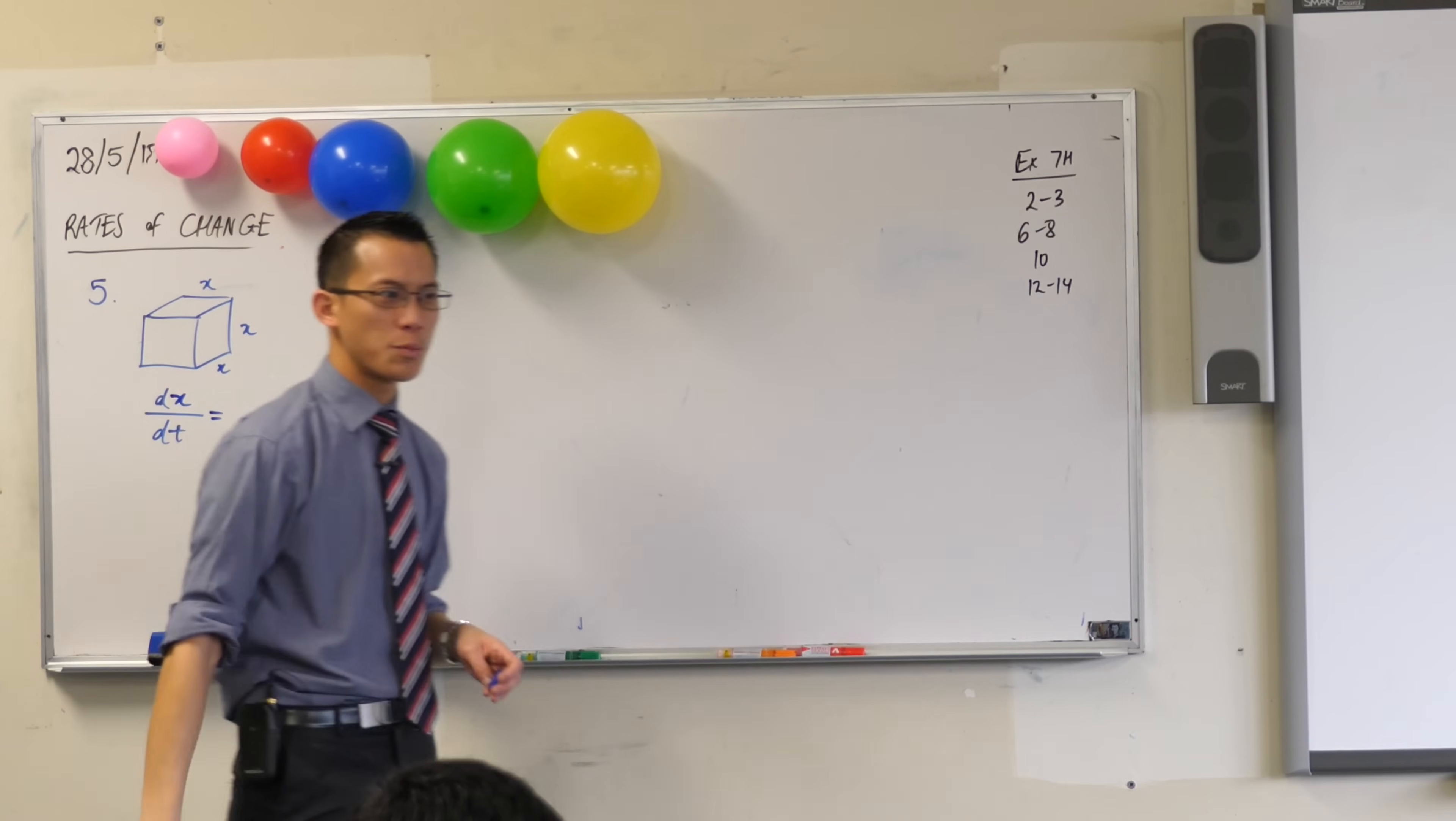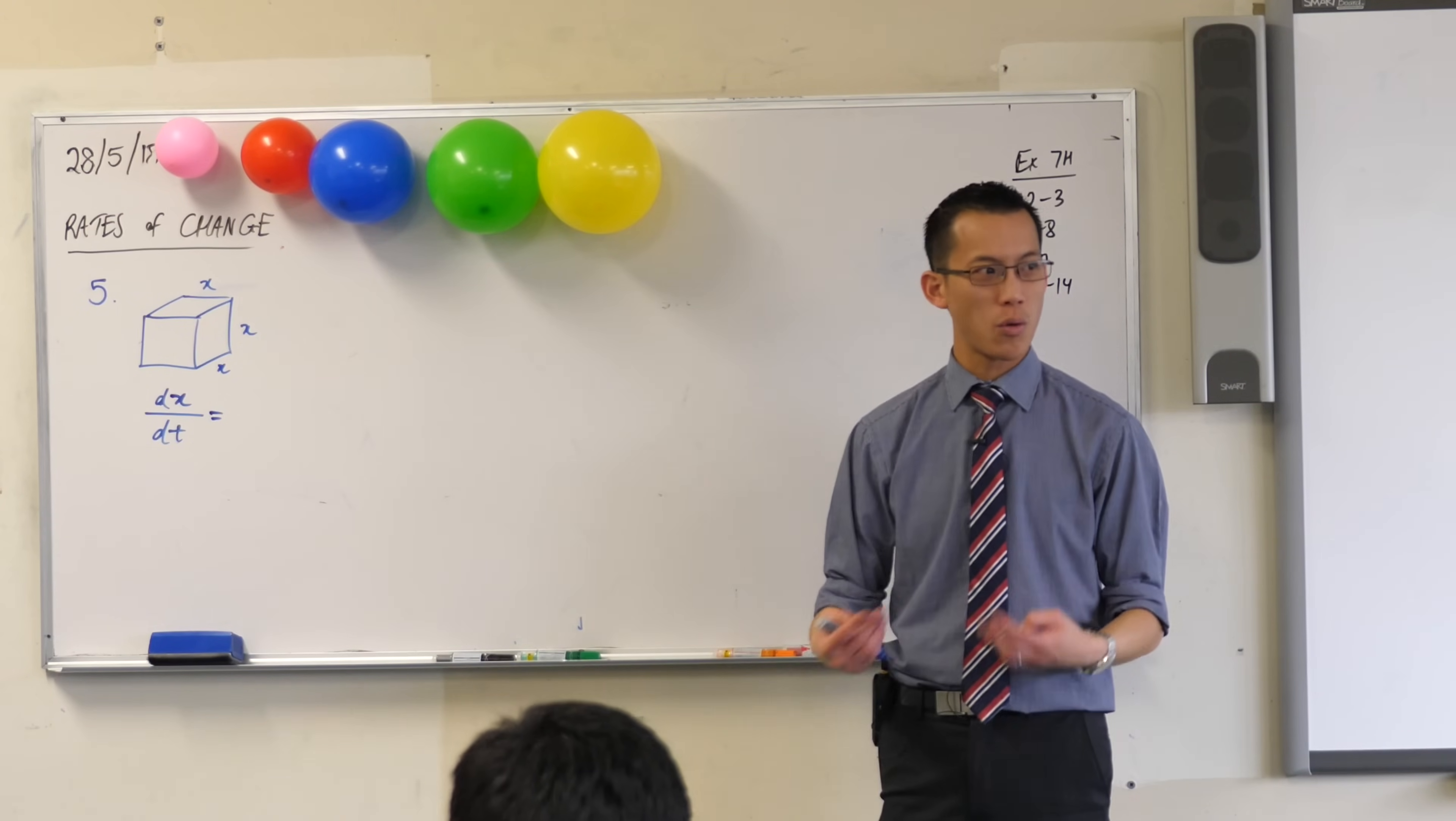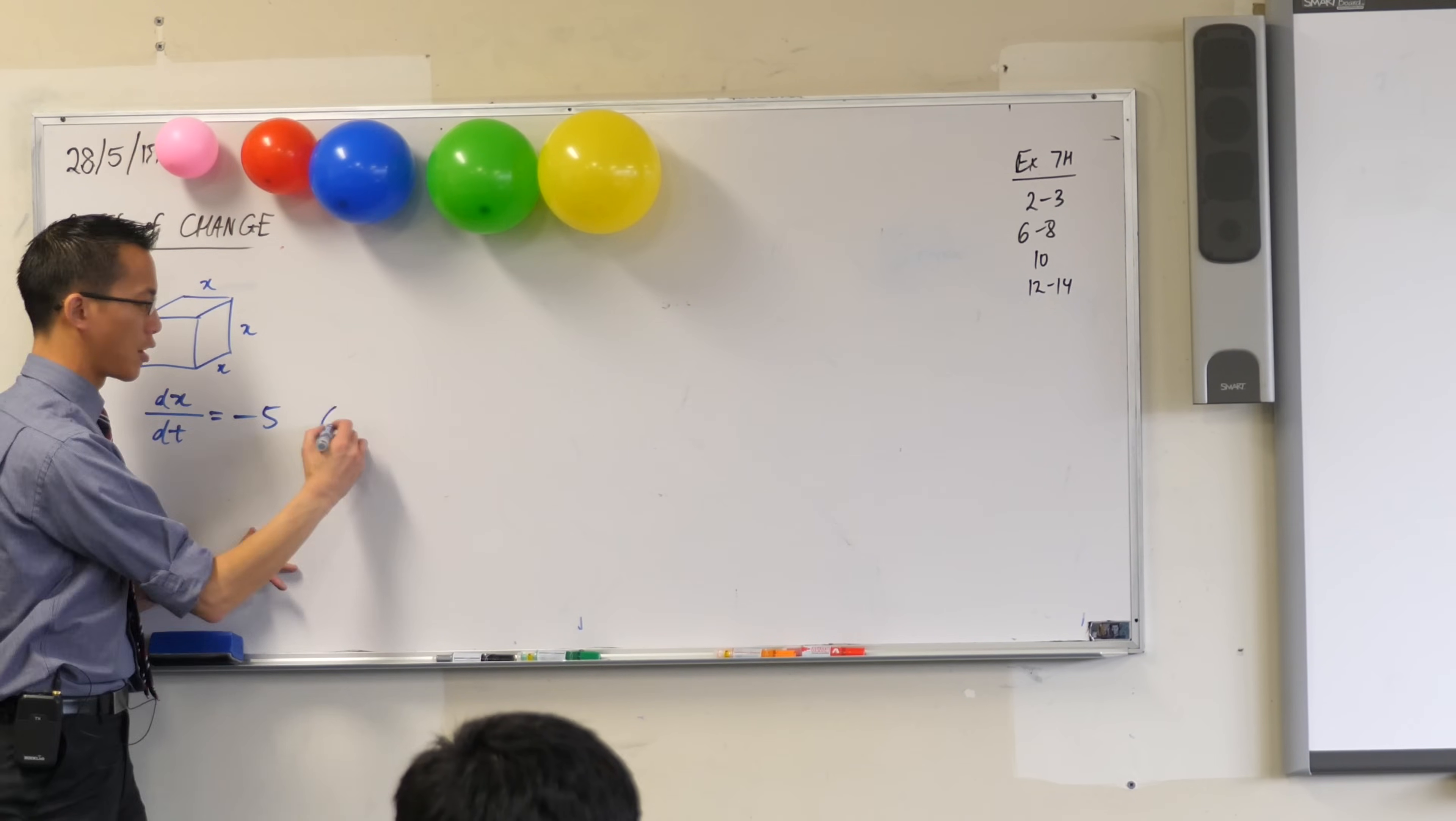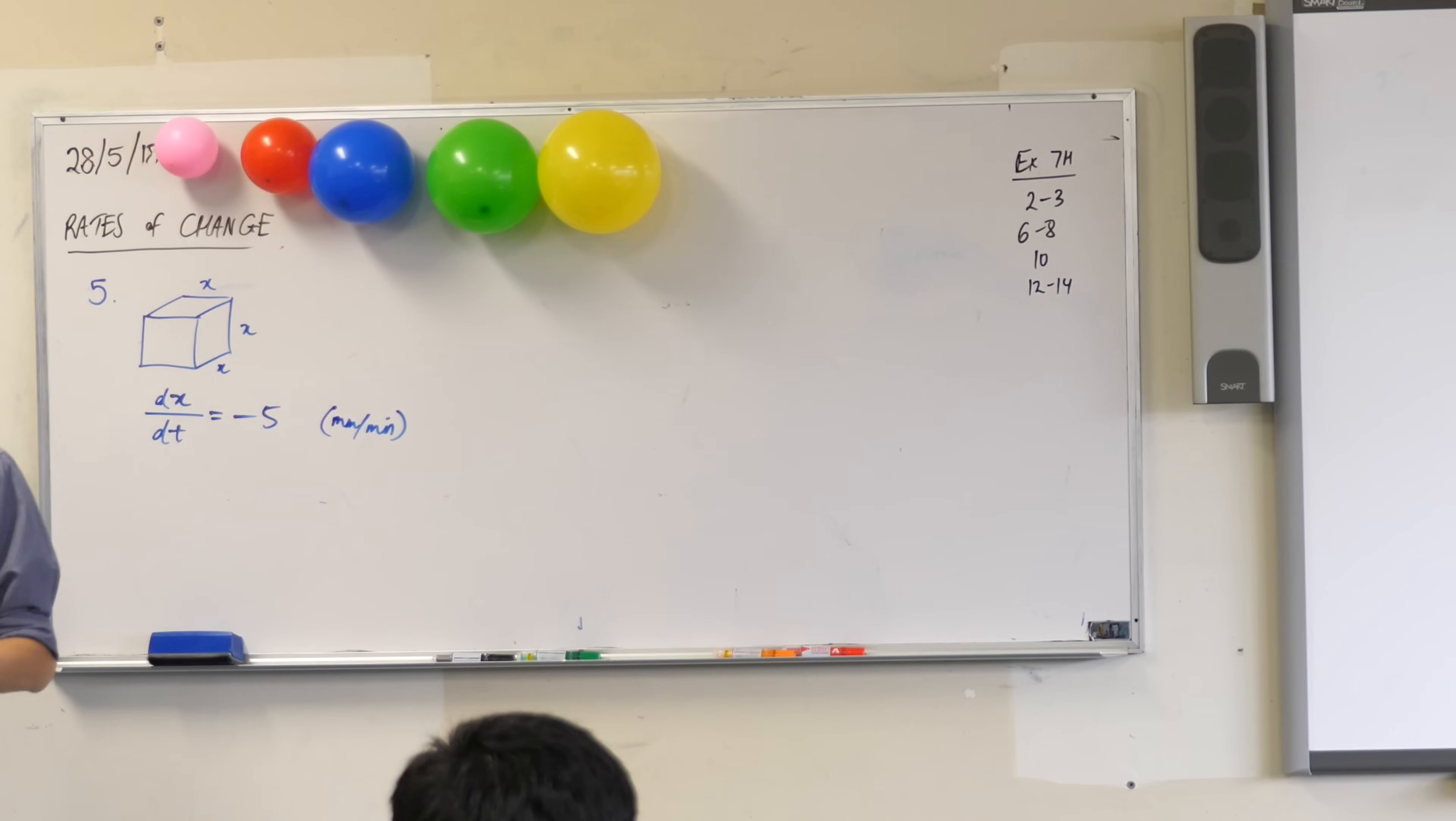Now, is it getting bigger or smaller? It's getting smaller. So the rate should mean that it's a decreasing function. So what should the side of it be? It should be negative, because the thing is getting smaller and smaller. Negative, and I'm going to put the value out the front, which is five. And just beside it, I'm going to put in the units, just so I've got it in my brain. And I'm pretty sure it's millimeters per minute this time, isn't it? This is what I was confusing with the previous question.